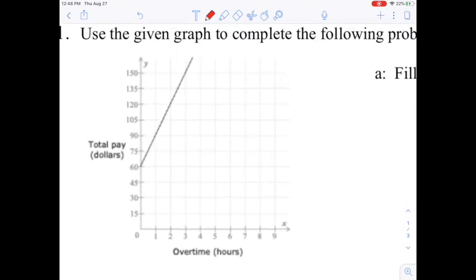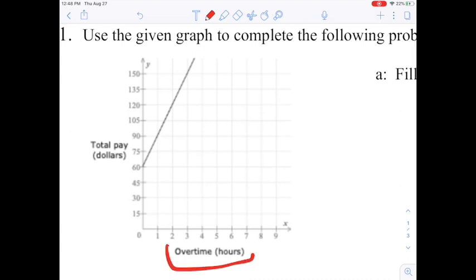So if we look at this graph, we see that there is a relationship between the amount of overtime somebody works and the amount of money that they make in total. If they work zero hours of overtime, they are making what looks to be $60. If they are working one hour of overtime, they are making $90. The X of one goes with the Y of 90. Two hours, 120. Three hours, 150 total dollars of pay.